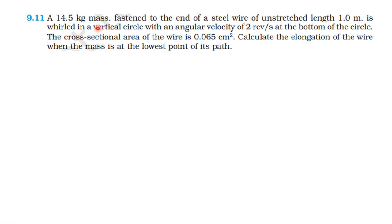Let us solve problem from NCERT textbook from the topic Mechanical Properties of Solid, Exercise 9.11. A 14.5 kg mass attached to the end of a steel wire of unstretched length 1 m is whirled in a vertical circle with an angular velocity of 2 rpm at the bottom of the circle. The cross-sectional area of the wire is 0.065 cm². Calculate the elongation of the wire when the mass is at the lowest point of its path.